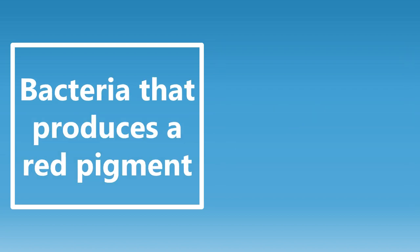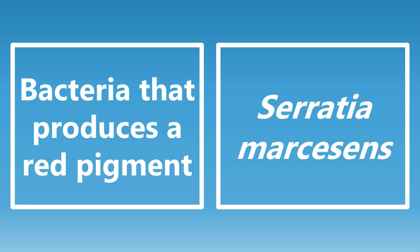A bacteria that produces a red pigment — this is going to be Serratia marcescans. This is a common organism associated with drug-resistant UTIs in healthcare-associated settings like hospitals and nursing homes. You may also know it as the organism that forms that reddish-pinkish film on the bottom of your bathtub. It doesn't normally affect immunocompetent people, but it can be very deadly for immunocompromised people, causing drug-resistant UTIs.